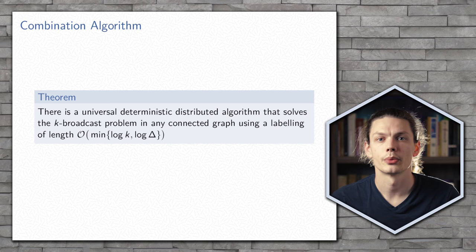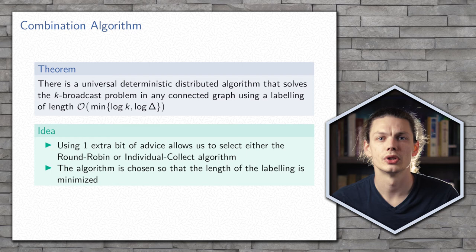Now that we have these two algorithms — one using O(log k) bit labels and the other using O(log δ) bit labels — we can combine these algorithms to achieve the best of both. This is simple to do: we use one extra bit of advice that tells the algorithm which strategy it should be using, whether it be the round robin or the individual collect.